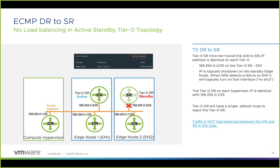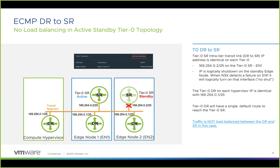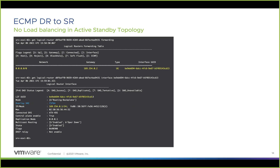In an active-standby topology for stateful services, we have a Tier-0 SR active on edge node 1 and standby on edge node 2. In this case, the same IP address is used between active and standby SRs, but the standby SR's interface is logically shut down. That means the distributed router has only a single default route, so there is no load balancing between the DR and the SR — no ECMP in that case. In the routing table, we see a single default route pointing to 169.254.0.2, and an overlay is used to send traffic from the DR to the SR.